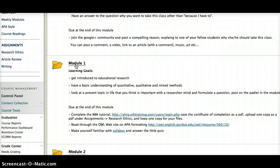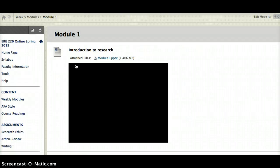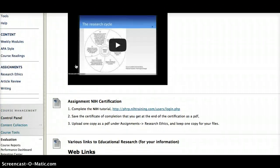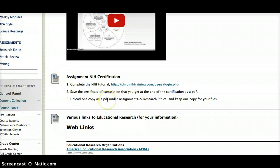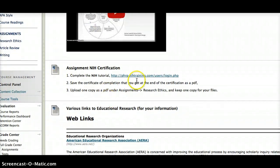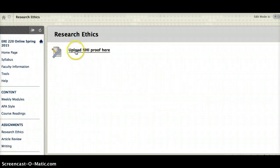So let's see what is in Module 1. Alright, we talk about what is research. Then we have the assignment with the NIH certification. You can go to this link, you get a PDF, and then you go to assignments, research ethics, and upload that PDF. So, it will be over here. Assignments, research ethics. Let's go check it out real quick. So there it is. You can upload the NIH proof right here.